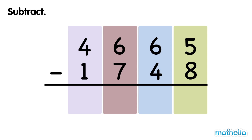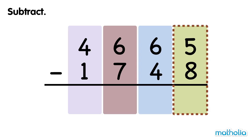Let's find 4,665 minus 1,748. Subtract the ones. We cannot subtract 8 ones from 5 ones, so we regroup 1 ten into 10 ones. Now we have 5 tens and 15 ones. Now we can subtract the ones. 15 ones minus 8 ones equals 7 ones.